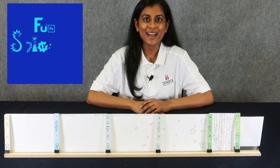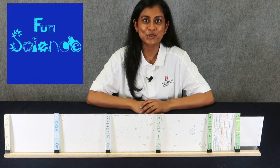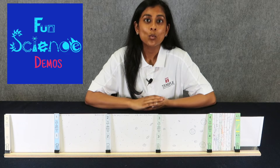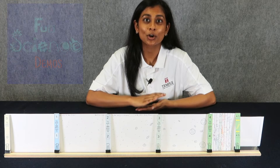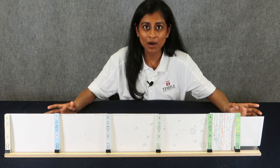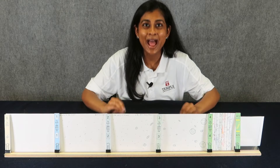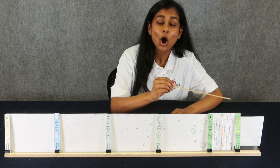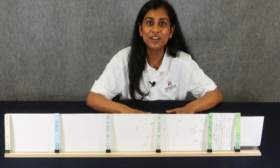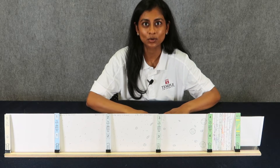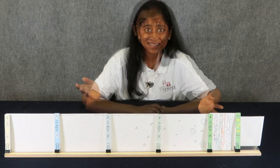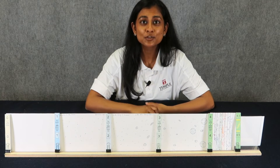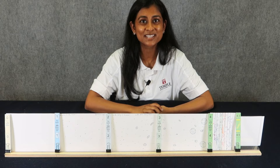My name's Marla and I'm a science teacher here at Fun Science Demos. In another video we talked about how old our earth is, and we use this model to show how old our earth is. Scientists have estimated our earth to be about 4.5 billion years old, but how do they know that? Scientists have figured that age because of two really important pieces of evidence.